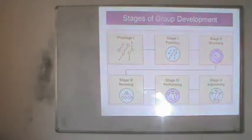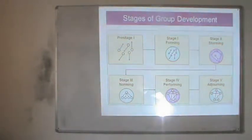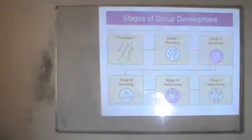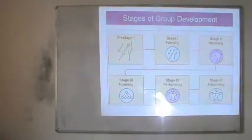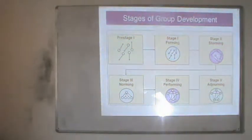Stage four is the performing stage. All group members are performing their tasks with a very clear structure, exchanging views and trying to finish their work by the given deadline. This performing stage is the last stage for permanent groups. But when the nature of the group is temporary, after the task is performed and the goal is achieved, it shifts to stage five — the adjourning stage — where the group gets disbanded, shown by dotted lines, and members return to their original places in the organization.